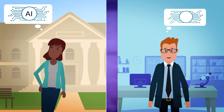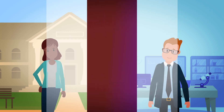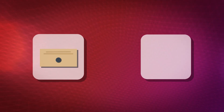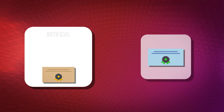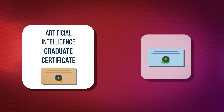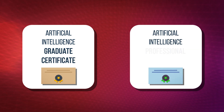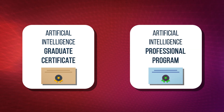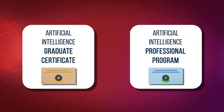Ready to become an expert in artificial intelligence? Stanford Online offers two programs to help you reach your goals: the Artificial Intelligence Graduate Certificate and the Artificial Intelligence Professional Program. This video will explain some of the key differences between the programs.